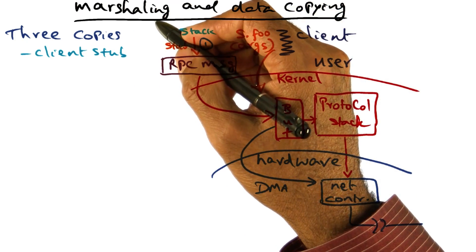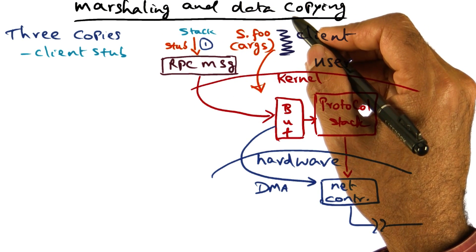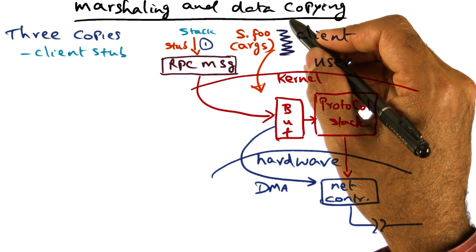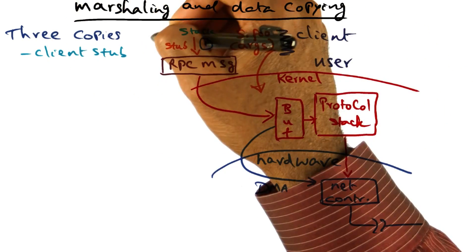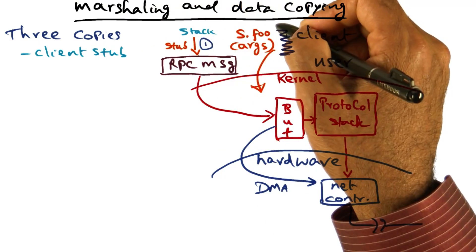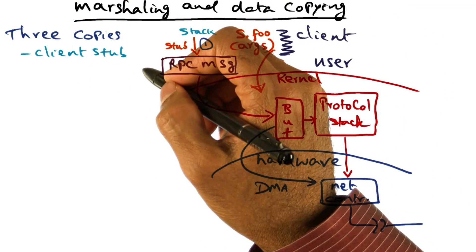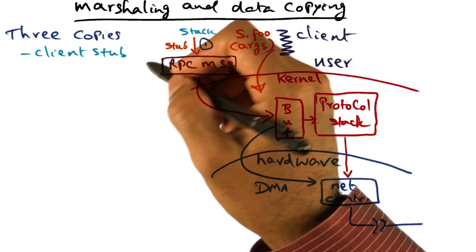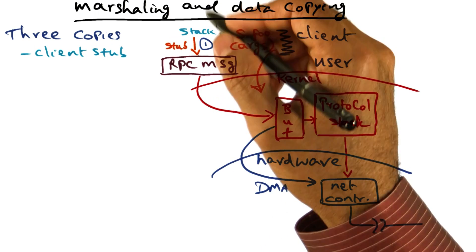The biggest source of overhead in marshalling is the data copying that's going to happen. Potentially, in doing the marshalling, there could be three copies involved. Where are these three copies coming about?